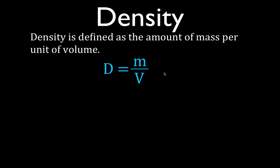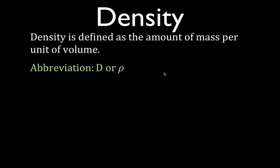Before we go over some calculations, I'm going to go over a quick description of what density is, what mass is, and what volume is, and then we'll do some calculations at the end of the video. Density is the amount of mass per unit of volume. We abbreviate density with either a capital D or the Greek letter rho, which looks like a fancy P.